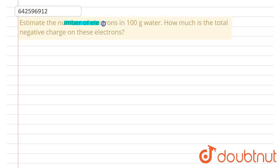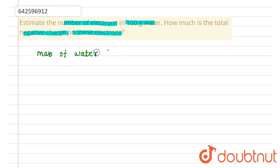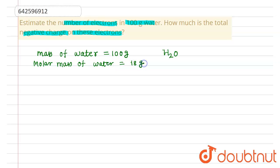In this problem, we have to find the number of electrons in 100 grams of water and the total negative charge on these electrons. The mass of water is 100 grams, and water has the molecular formula H₂O, so the molar mass of water is 18 grams.